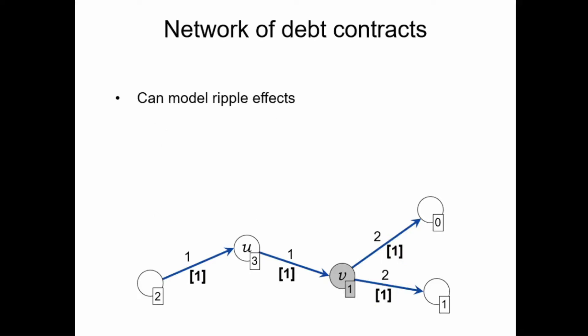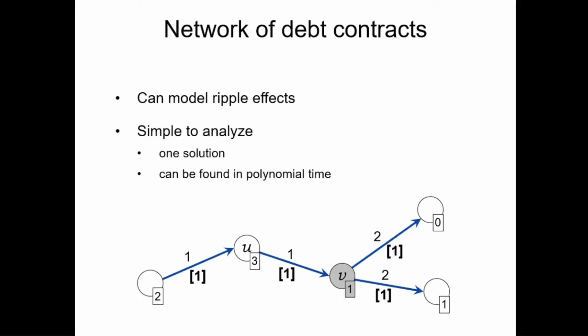The simple model has already been studied in various works because it already allows us to see how a single default can cause a ripple effect throughout the network. The model is also rather simple and nice from a computational point of view: apart from some degenerate cases, it only has one solution — one configuration of payments that satisfies these rules — and this solution can be computed in polynomial time.